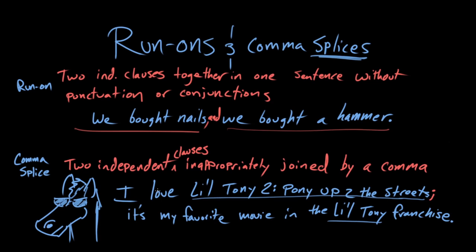So to review: when you're looking at a run-on, you're looking at two independent clauses together in one sentence, joined inappropriately without punctuation or conjunctions. 'We bought nails, we bought a hammer' — there's not really a place to know where the division between clauses is. The thing to do is to add a comma and a conjunction, or to combine them using a semicolon.